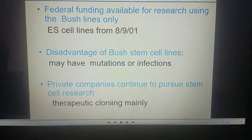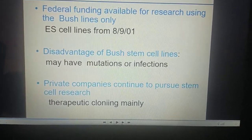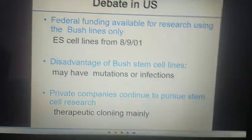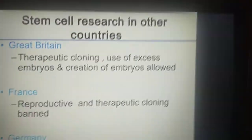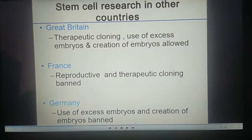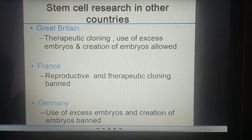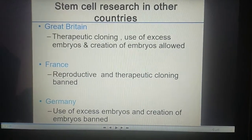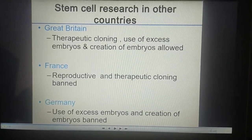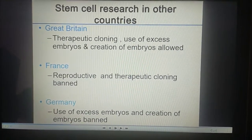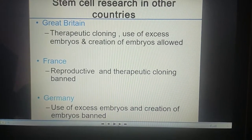A disadvantage of the Bush stem cell lines is that they may have mutations or infections. Private companies continued to pursue stem cell research. In Great Britain, therapeutic cloning, use of excess embryos, and creation of embryos are allowed. In France, reproductive and therapeutic cloning are completely banned. In Germany, use of excess embryos and creation of embryos are completely banned.